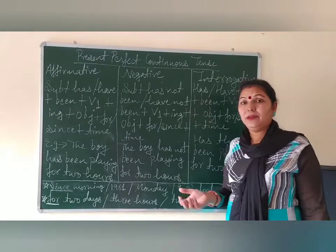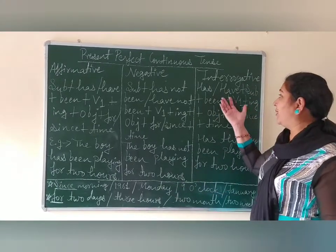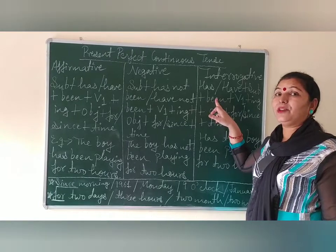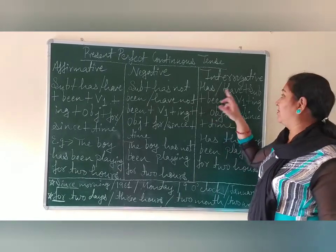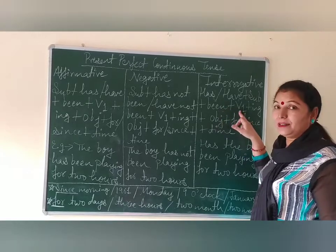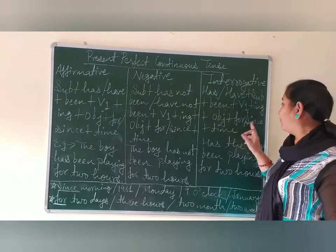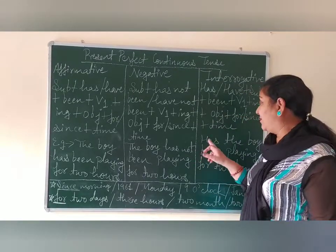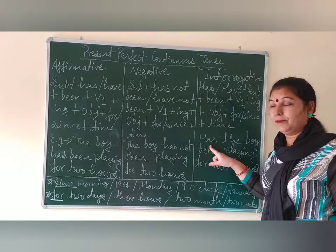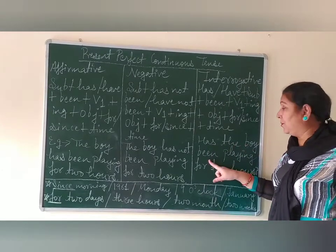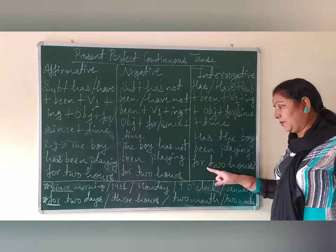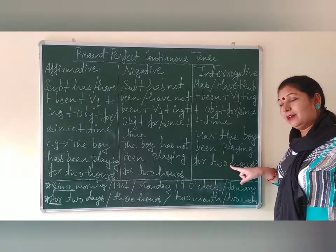The third type is Interrogative. In this we have to make a question, so we put Has or Have at the beginning. The structure is: Has/Have + subject + been + verb first form + ING + object, then For or Since according to time. For example: 'Has the boy been playing for 2 hours?' Because boy is singular, we use Has. Been playing — that is the first form of verb plus ING. For 2 hours, because the time is confirmed.